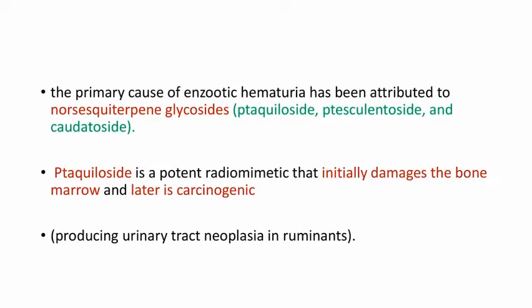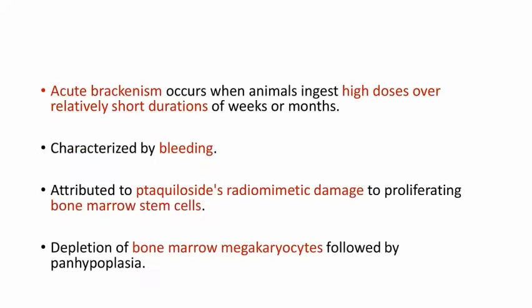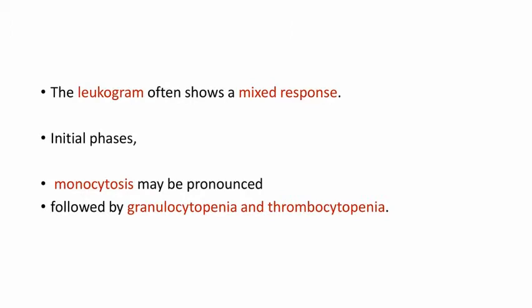Ptaquiloside is the carcinogen causing urinary bladder neoplasia. Coming to the next disease: acute brackenism, or hemorrhagic disease caused by Bracken Fern poisoning. Acute brackenism occurs when animals ingest high doses over a relatively short duration of weeks or months. It is characterized by bleeding and attributed to ptaquiloside's radiomimetic damage to proliferating bone marrow stem cells. Depletion of bone marrow megakaryocytes is seen in this condition. The leukogram often shows a mixed response.